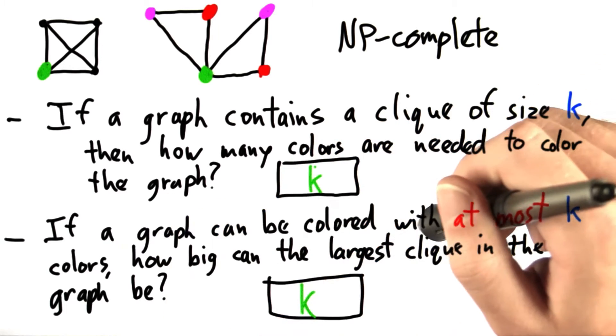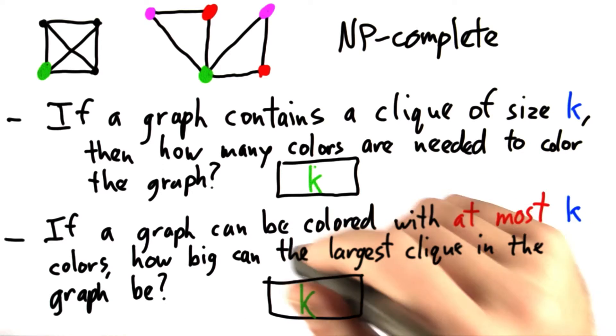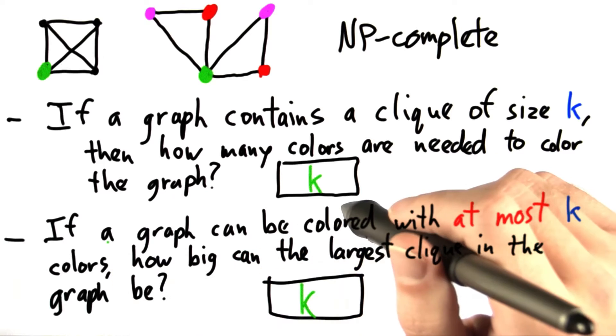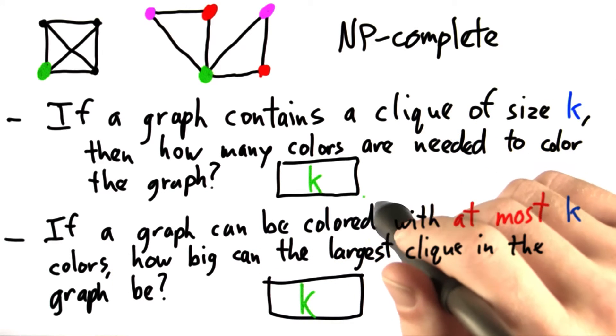Now, for the second question, let's say we know that the graph can be colored with at most k colors and that's all we need. We don't need more than k colors.